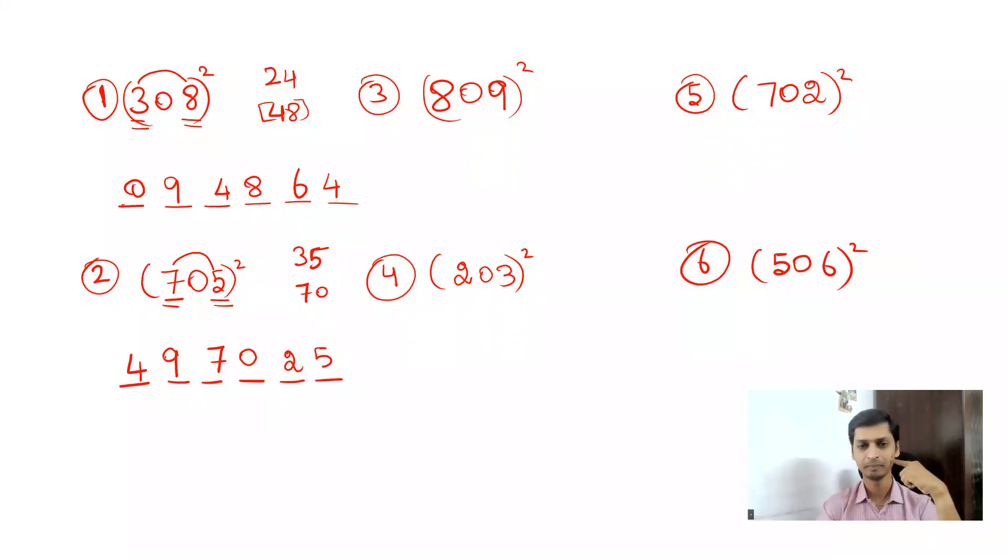Next you have 809 square. Put 1, 2, 3, 4, 5, 6 dashes. What is 9 square? You get 81. Now 8 times 9, you get 72. Double this 72, you get 144, but you have three digits and you want to write only two digits.